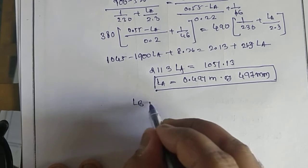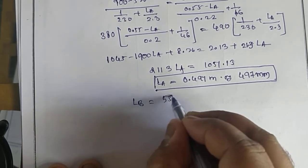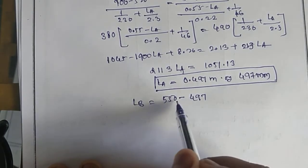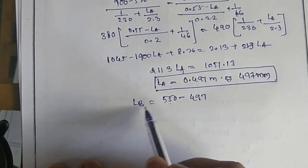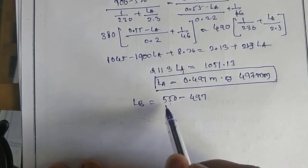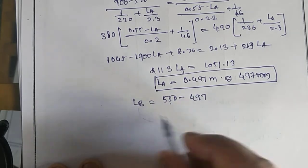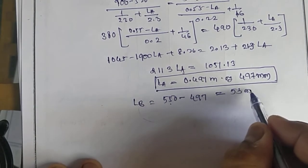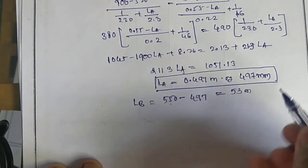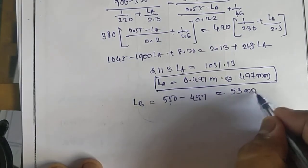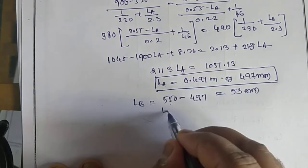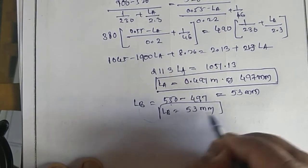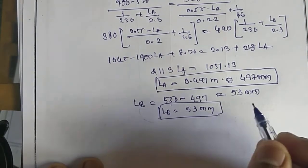L_B equals 550 minus 497, because L_A plus L_B equals 550 mm total. Deducting L_A, we get L_B equal to 53 mm.